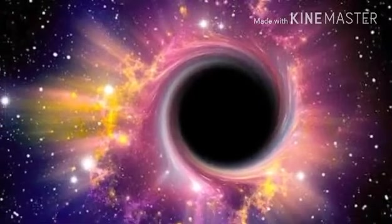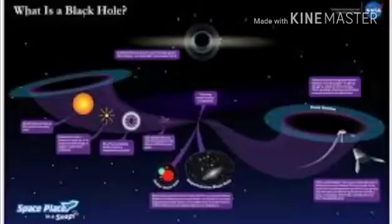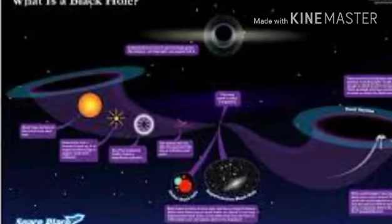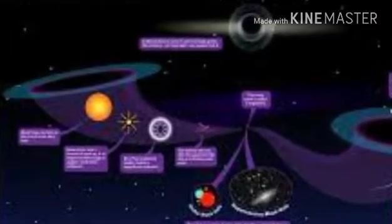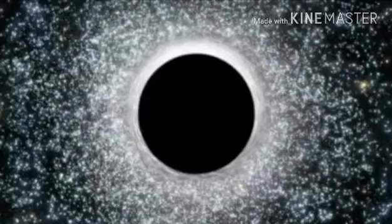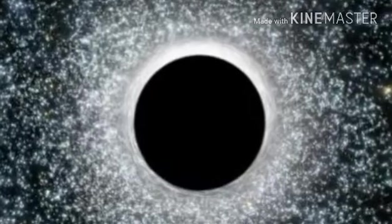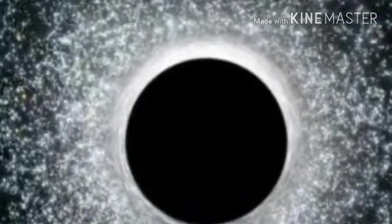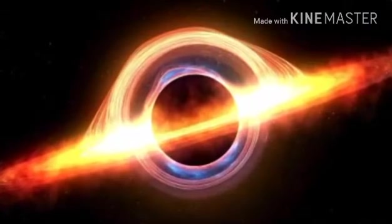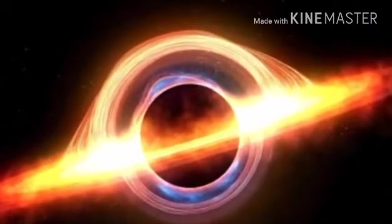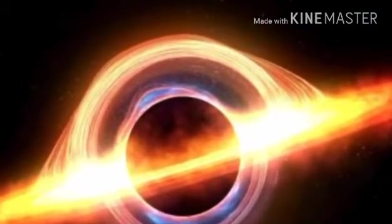Obviously getting a gyroscope close enough to a black hole to perform these experiments isn't exactly easy. But that's okay, because the team has also come up with a way to observe the same effect from here on Earth, measuring the precession frequencies of matter falling into either black holes or naked singularities using X-ray wavelengths.